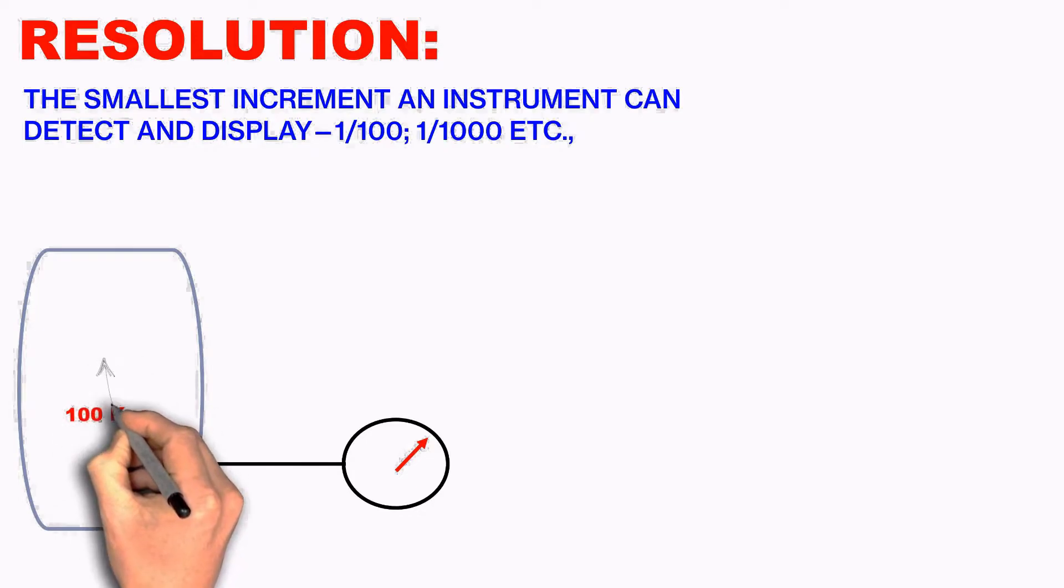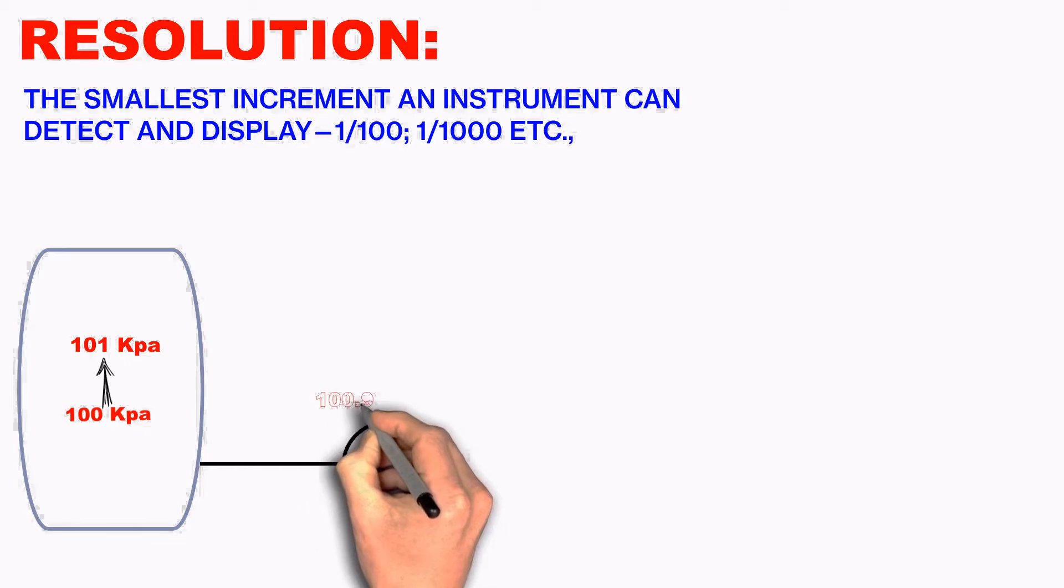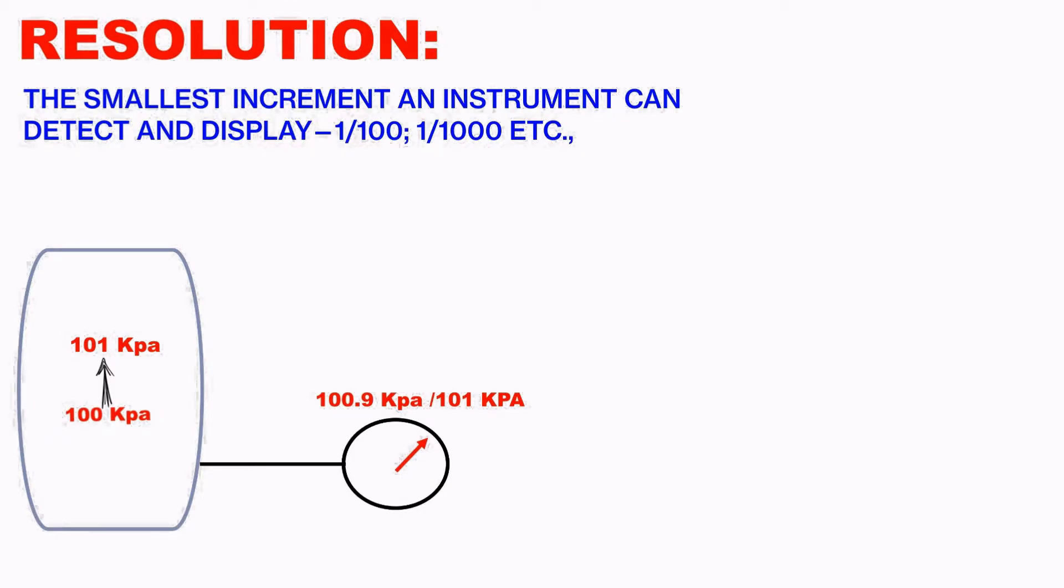Now the pressure increases to 101 kPa. So whether these instruments are able to measure the increment of 1 kPa, and that is called the resolution. For example, the pressure changed from 100 kPa to 101 kPa. So the increment is 1 kPa.